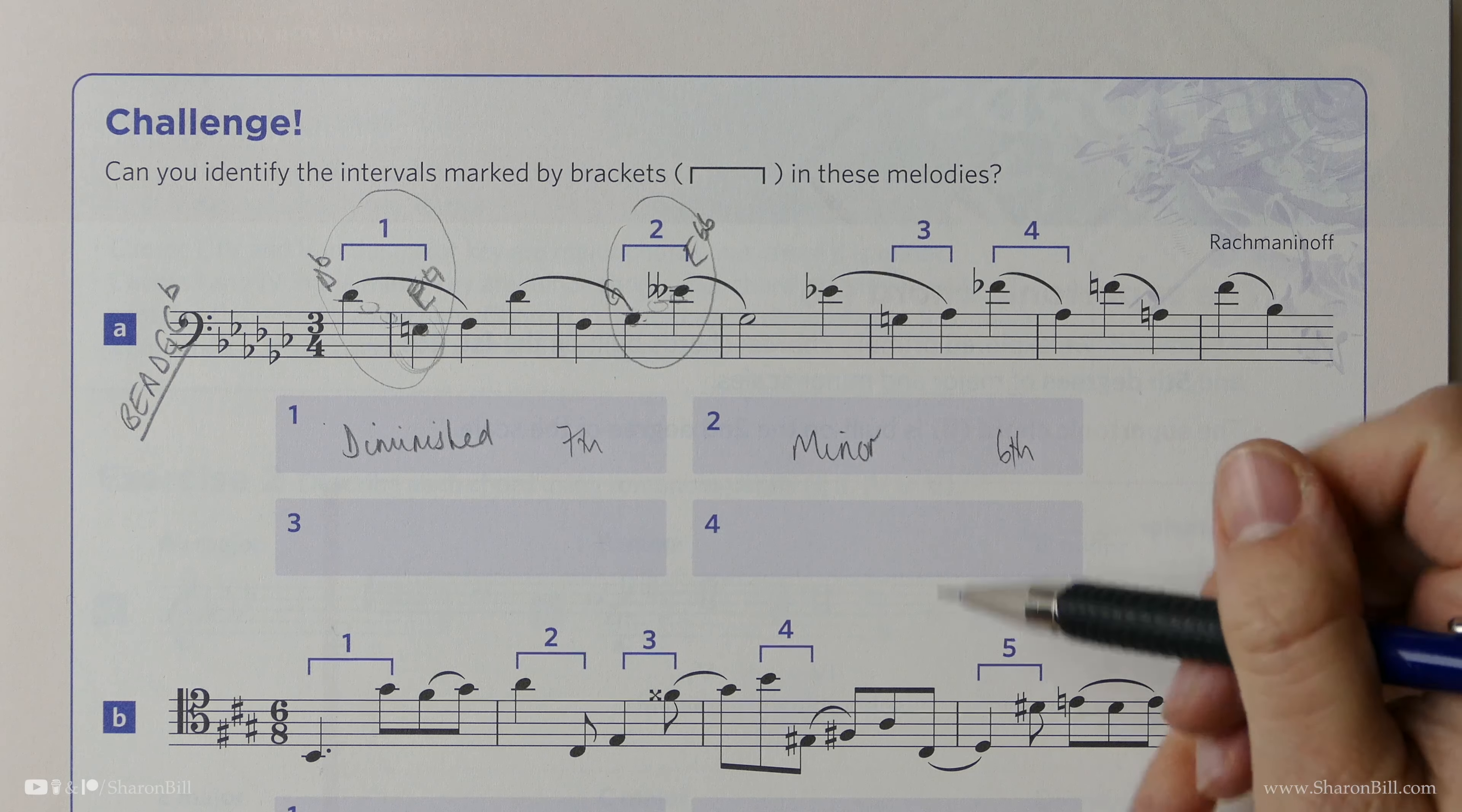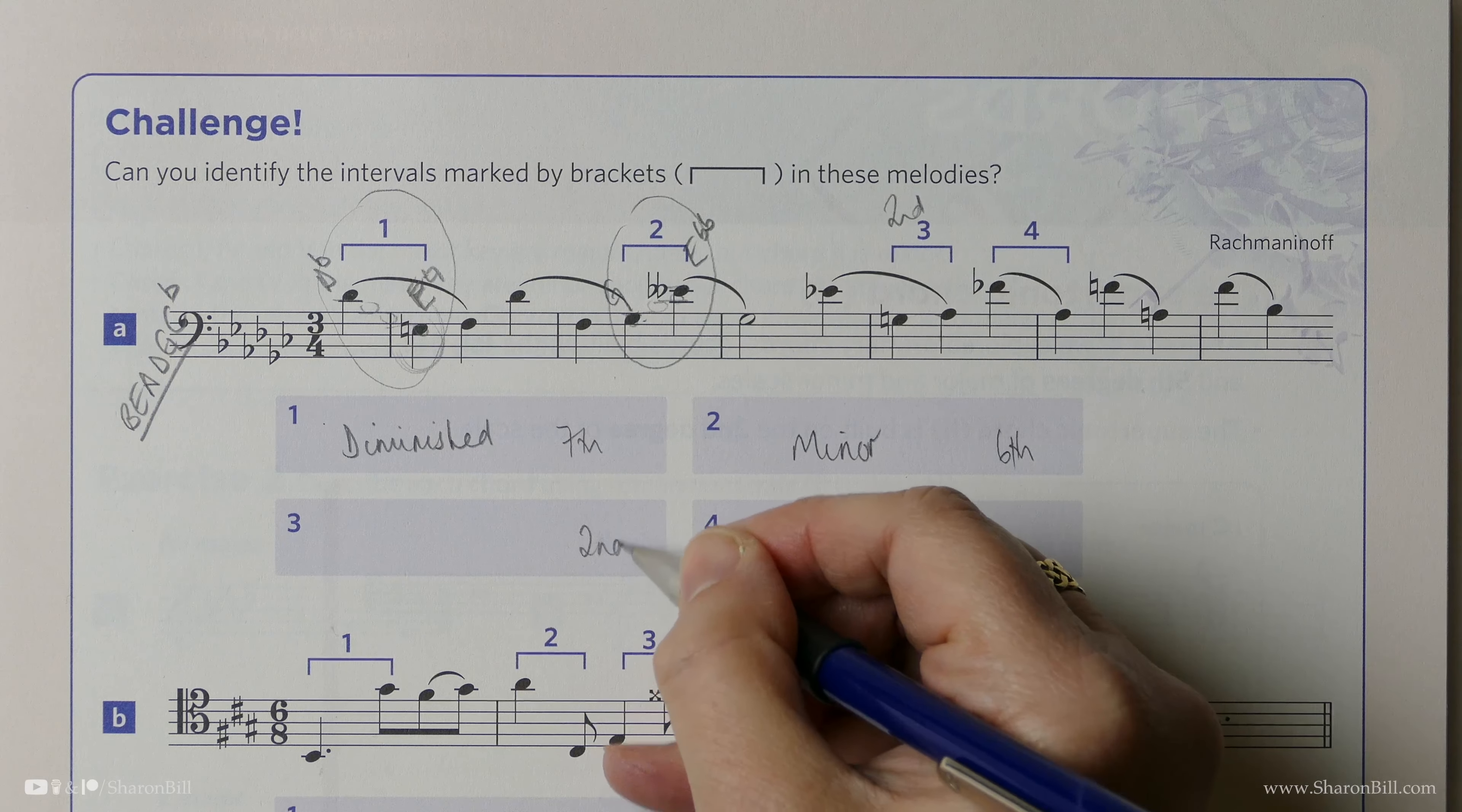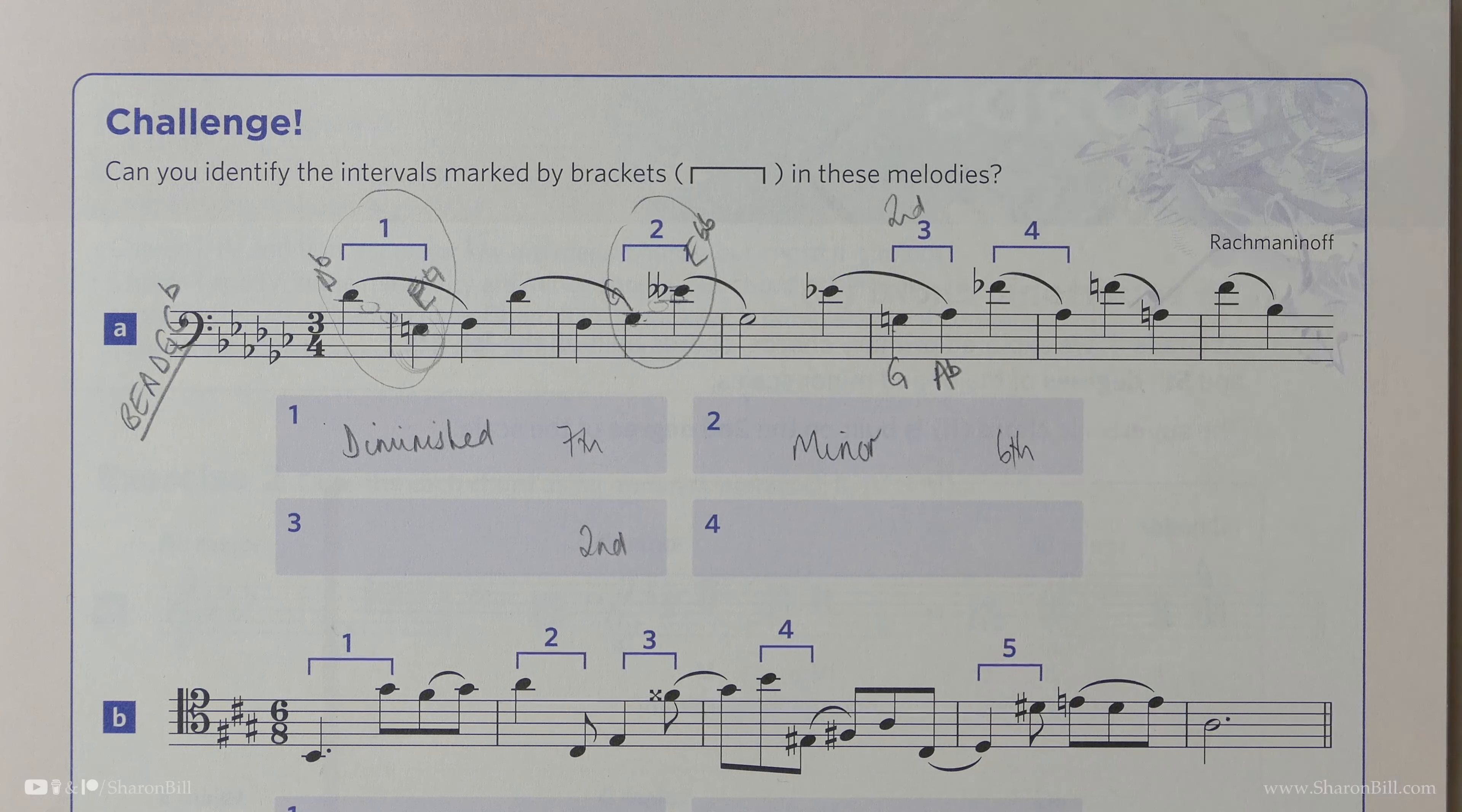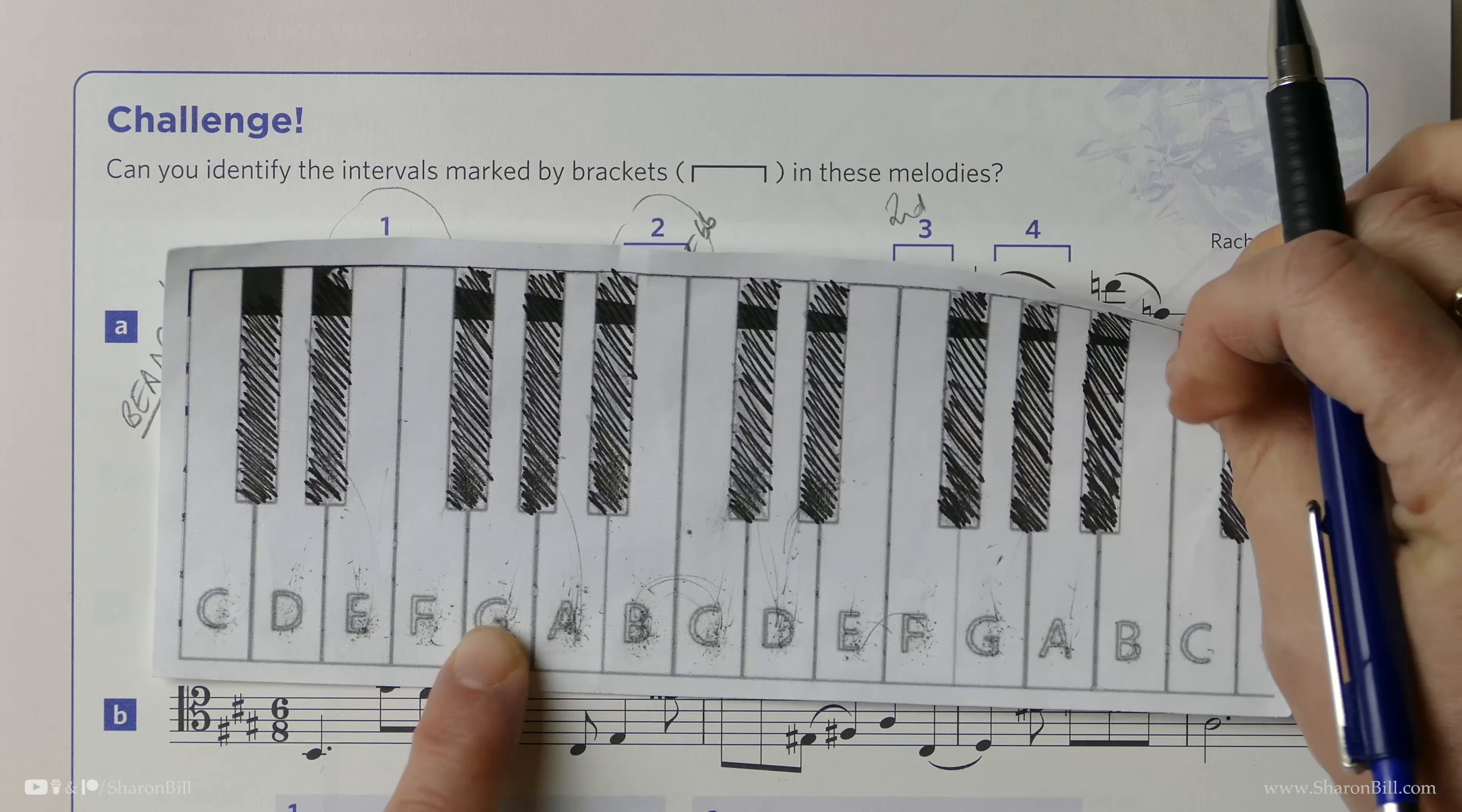So here we have the interval of a one, two, a second of some sort. So we can just go ahead and we can say that straight away. Now here this note is a G. It's a G-natural. And here we have an A-flat. Now we know that G to A is a major interval. It's a full tone. And then a semitone smaller takes us from major to minor. So that's soon dealt with.